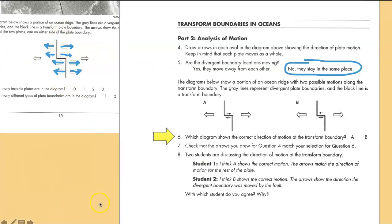Which diagram above shows the correct direction of motion at the transform boundary? And this would be A, right here. This is correct. This is not correct. Check that the arrows you drew for question 4 match question 6. So let's see. Right here we have things moving to the right, and then below it we have things moving to the left. So our diagram matches diagram A.